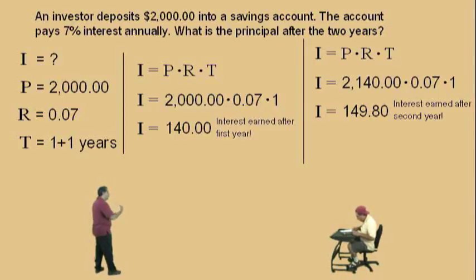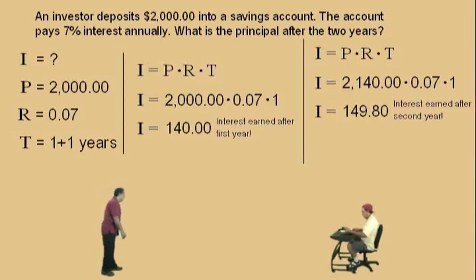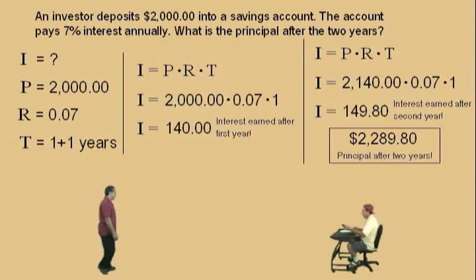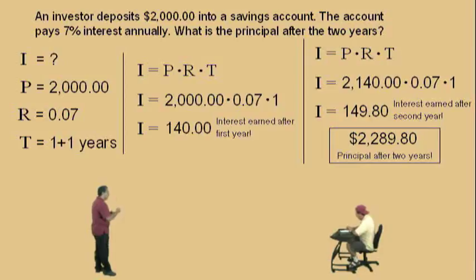This is the interest earned for the second year. So what is the total balance after two years? It's 2,140 plus $149.80, which gives $2,289.80. That's the principal for the two years. The investor earned $289.80 over the two years.